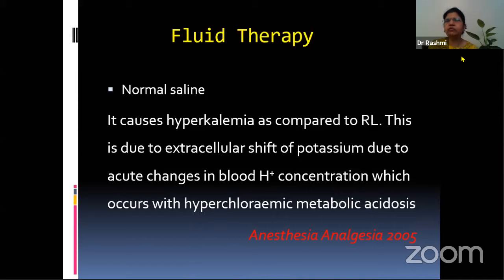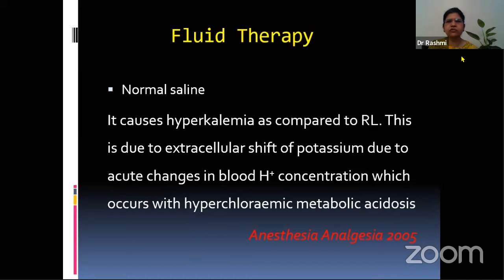Traditionally, world over, we are using normal saline. However, reports are now coming that it causes hyperkalemia, which is very difficult to understand because it is the only fluid that does not contain potassium. It is because it causes extracellular shift of potassium due to acute changes in blood pH concentration, which occurs with hyperchloremic metabolic acidosis. Normal saline has a very high chloride concentration of 154 milliequivalents per liter.